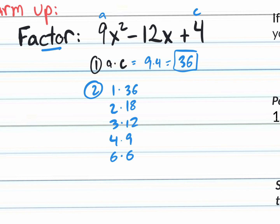Which pair of numbers, when you combine them, gives you the middle value b, which is negative 12? 36 plus 1 is 37 — not it. 8 plus 2 is 20 — not it. 3 plus 12 is 15 — not it. 4 plus 9 is 13 — not it. 6 and 6 is 12. You've got to change both signs because it's a negative 12, not a positive 12, so you change them both to negative 6 and negative 6.